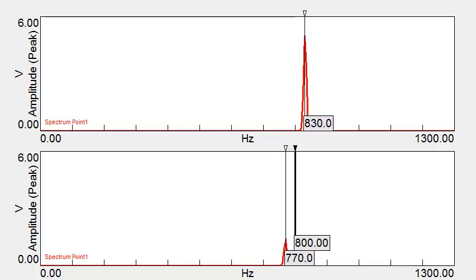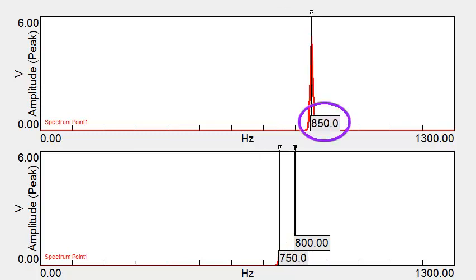Let me pause the acquisition here. You can see that the incoming signal is 50 Hertz above the 800 Hertz bandwidth. The signal on the bottom graph is being mirrored 50 Hertz below the 800 Hertz bandwidth at 750 Hertz.